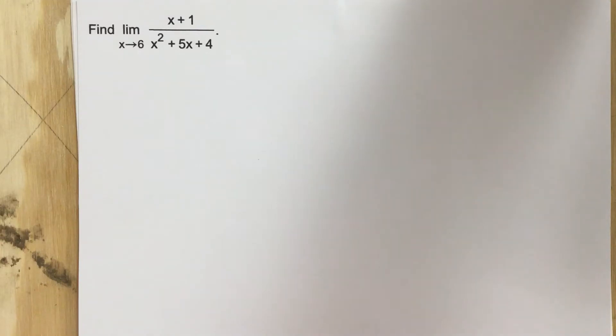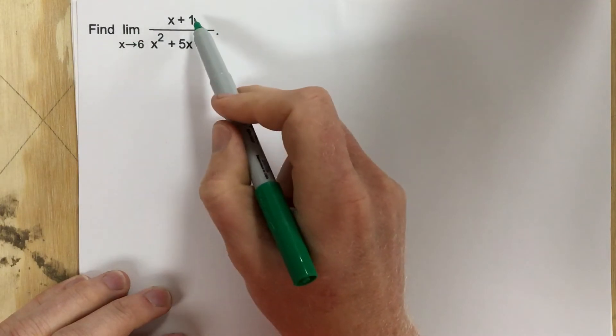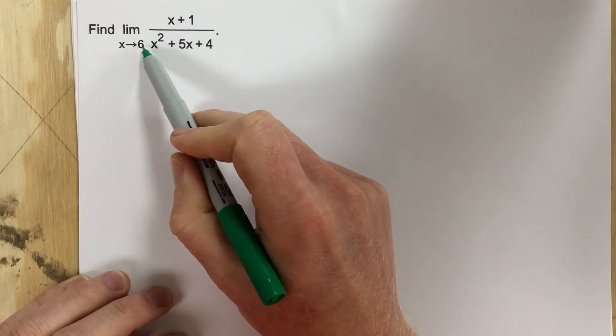This is problem number 3 for section 2.2. In this problem it says find the limit of x plus 1 over x squared plus 5x plus 4 as x approaches 6.